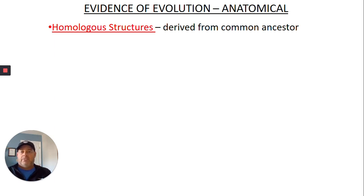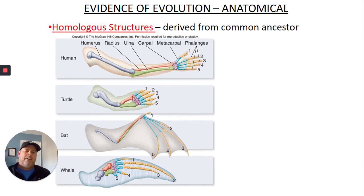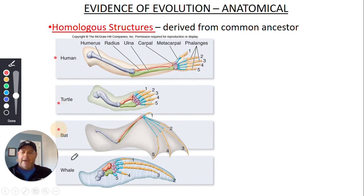Moving on to anatomical evidence. This is more probably what I grew up looking at as far as when we were looking at similarities of animals and how they were related to each other. It was almost always about their anatomy. And so even when I was in high school and college in our anatomy classes, it's more about comparing the anatomy because we didn't have the genome yet. We didn't have the ability to compare DNA and proteins. And so everything was still based on structure. So if you look at the picture here, so you have a human, you have a turtle, you have a bat and you have a whale.